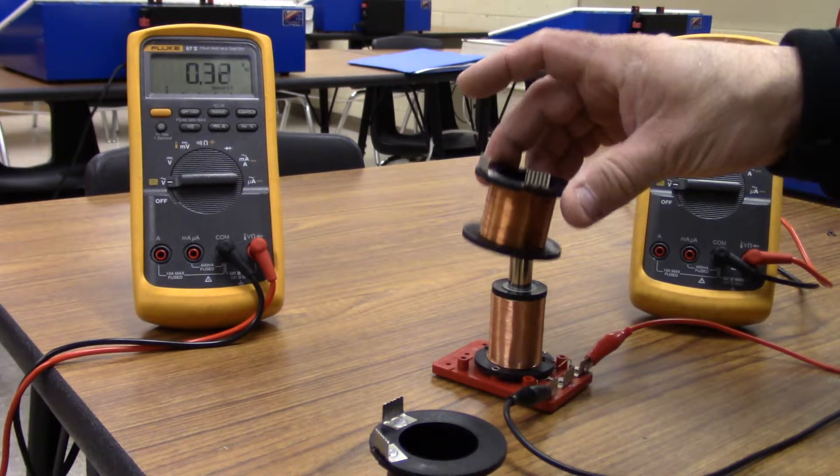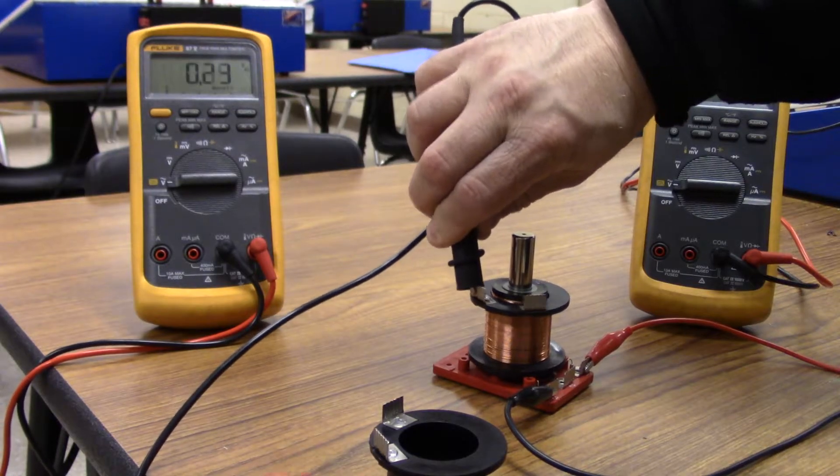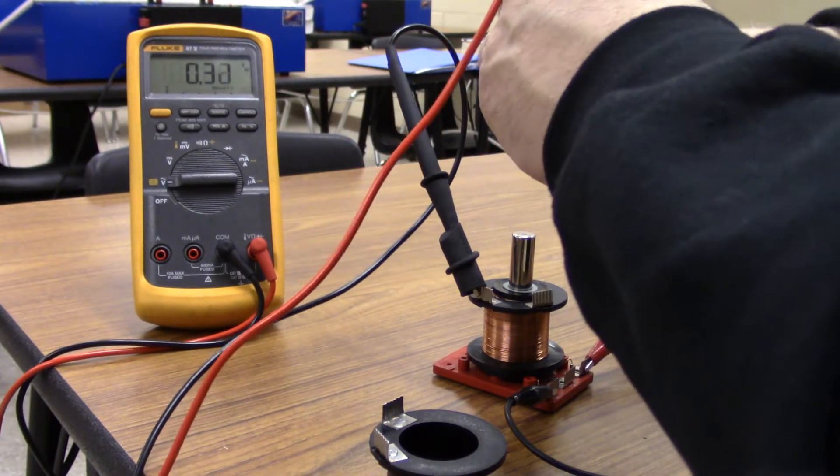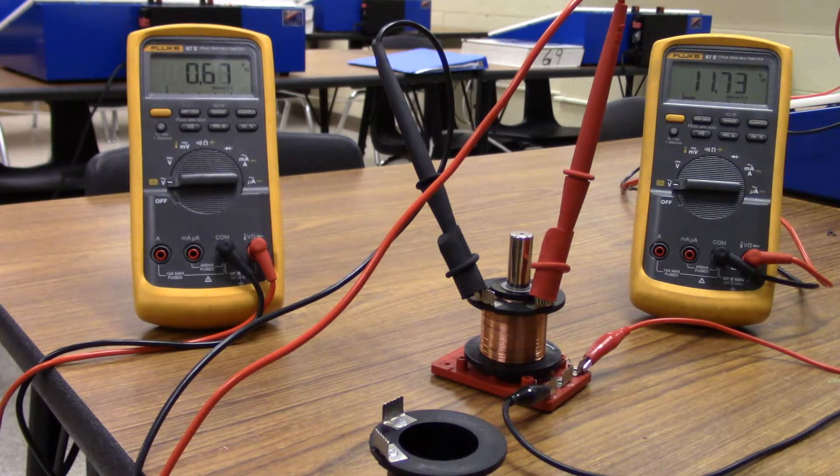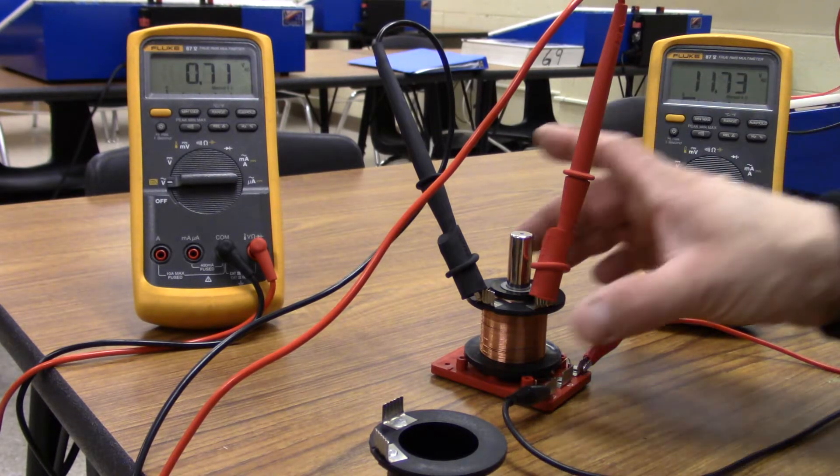If I put the step down winding on, I've got 11 going in, I've got 0.6 coming out.